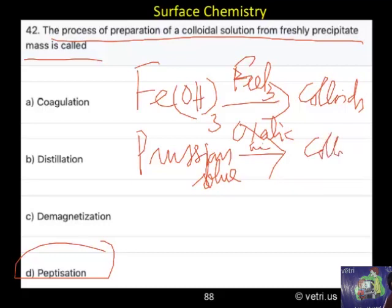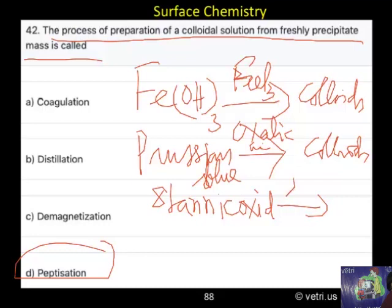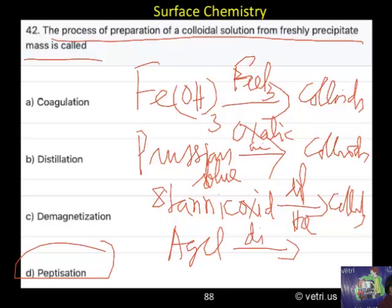Stannic oxide - add dilute HCl to get colloids. And silver chloride - add dilute HCl, again colloids.